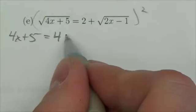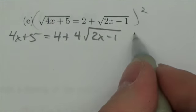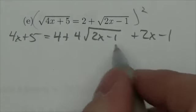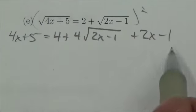On the right hand side, this will become 4 plus 4 root 2x minus 1, plus 2x minus 1. Okay, when you distribute that binomial all out, or foil it out, that's what you're gonna get here.